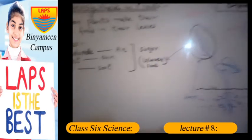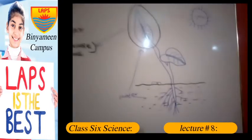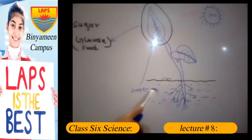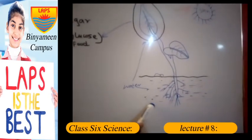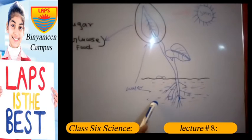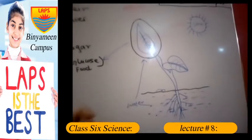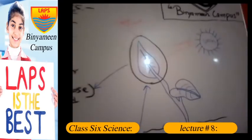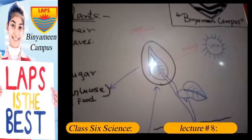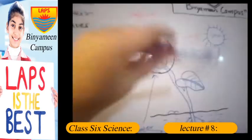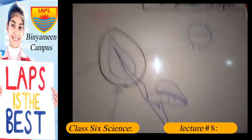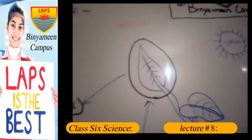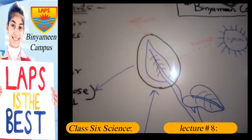We have roots and soil. The water will show you in blue colour. This is the leaves of the plant. This is the stem. This is the sun. The sun shines on the leaves. We said that the leaves contain chlorophyll, which gives them the green colour.